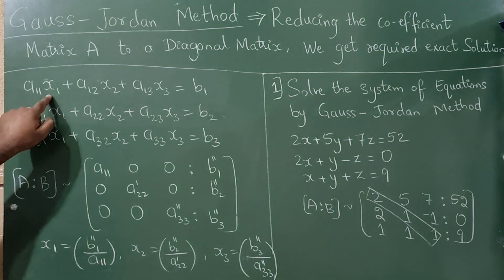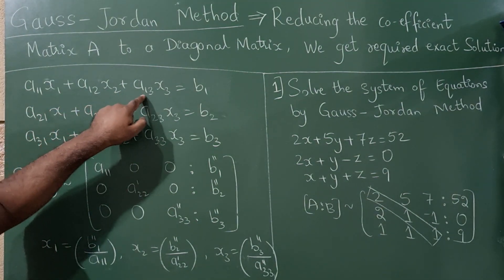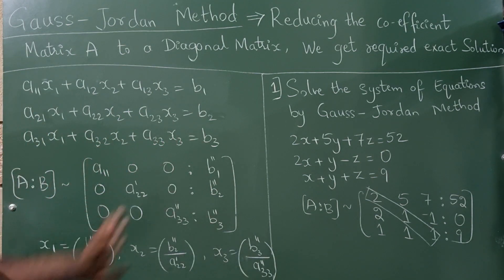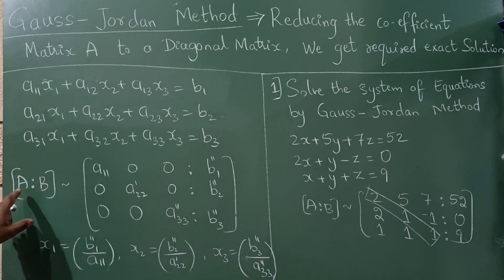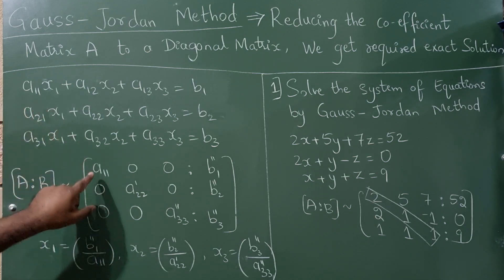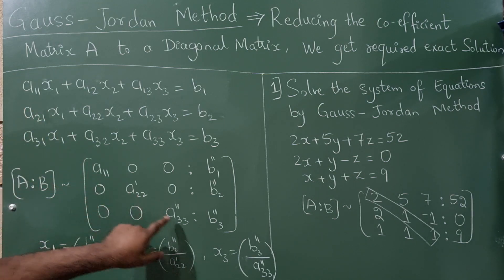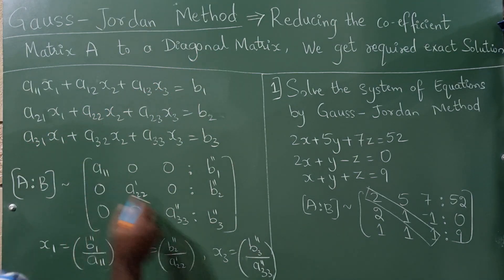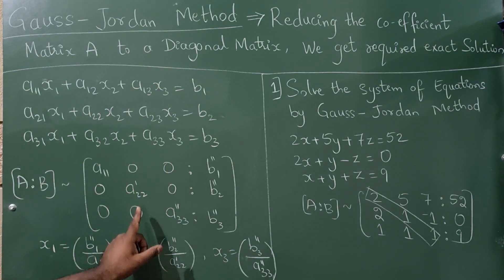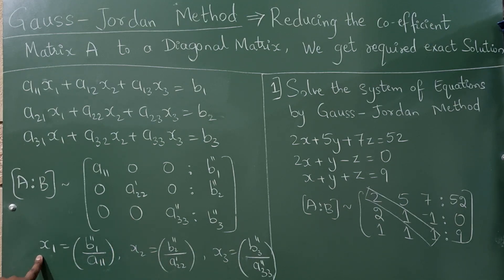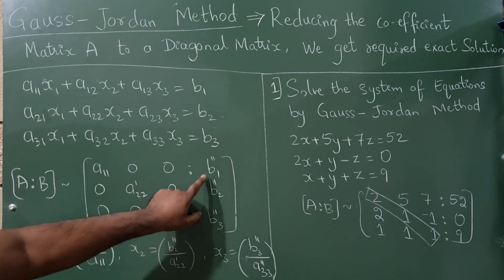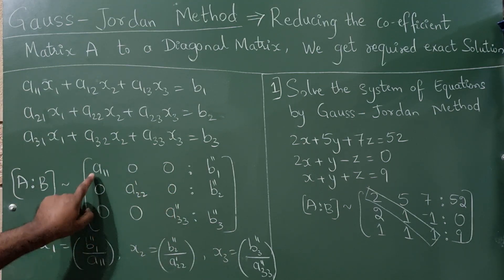Here A11·x1 + A12·x2 + A13·x3 = B1, and similarly for the rest of the equations. A is to be reduced so that the diagonal elements are A11, A22, and A33. Rest all elements should be made 0. By this we get X1 = B1'' / A11.